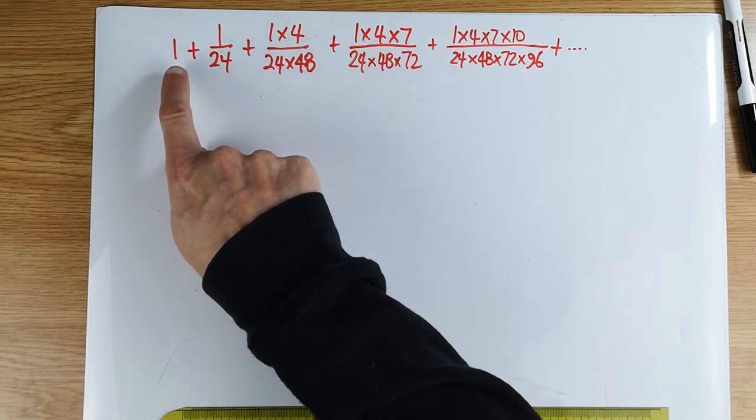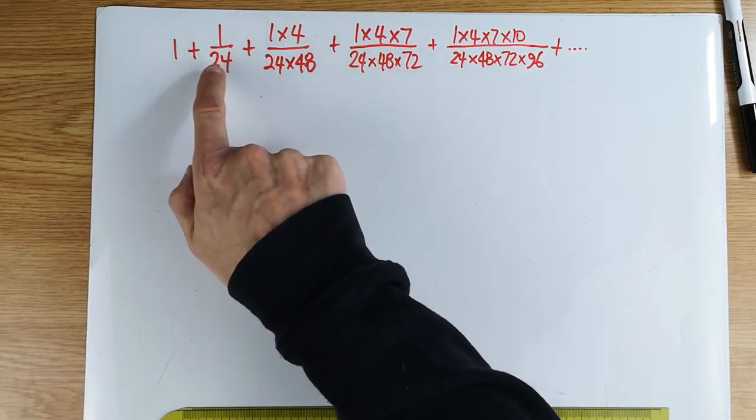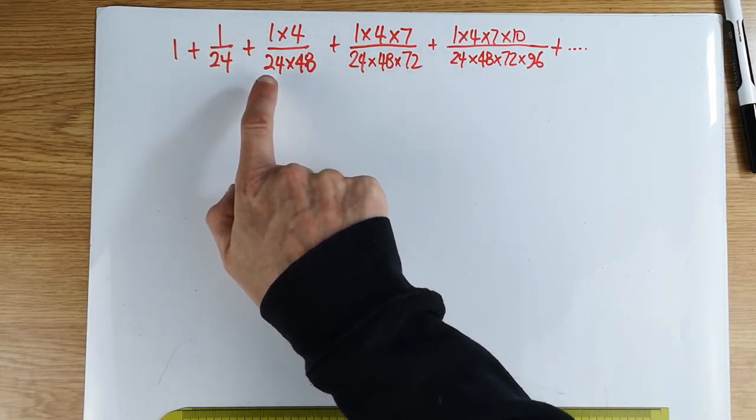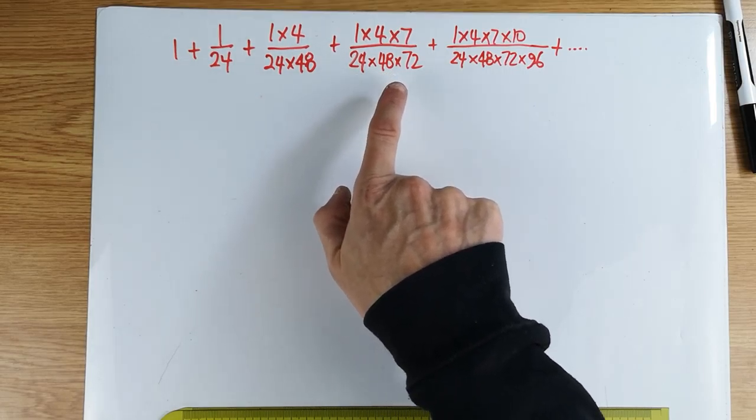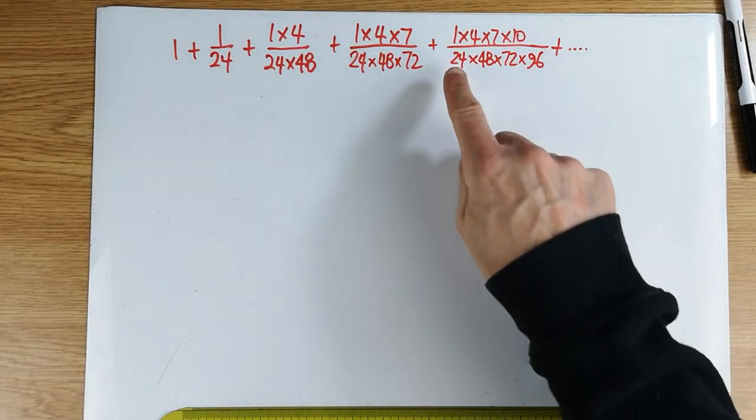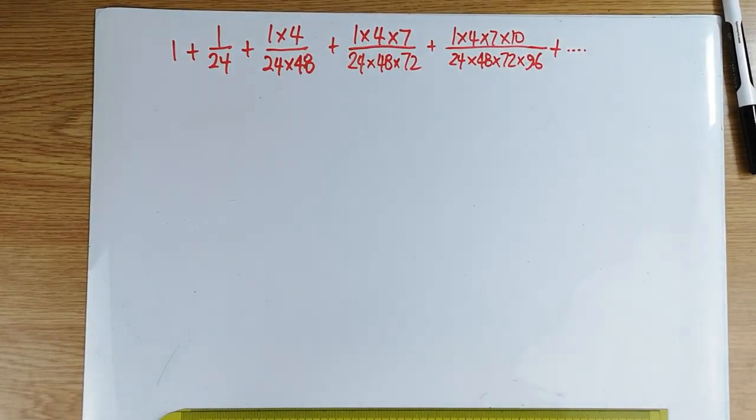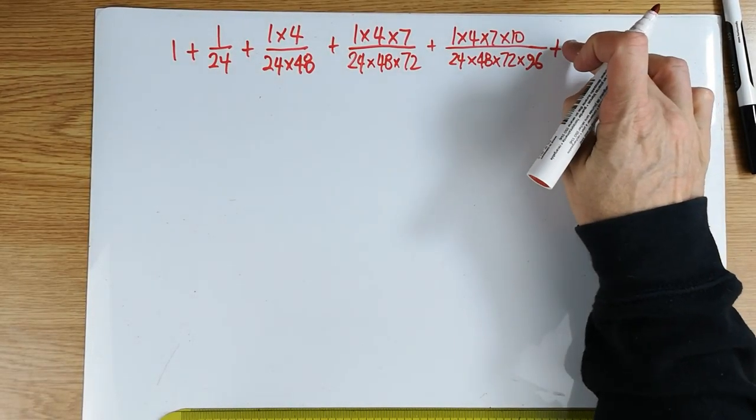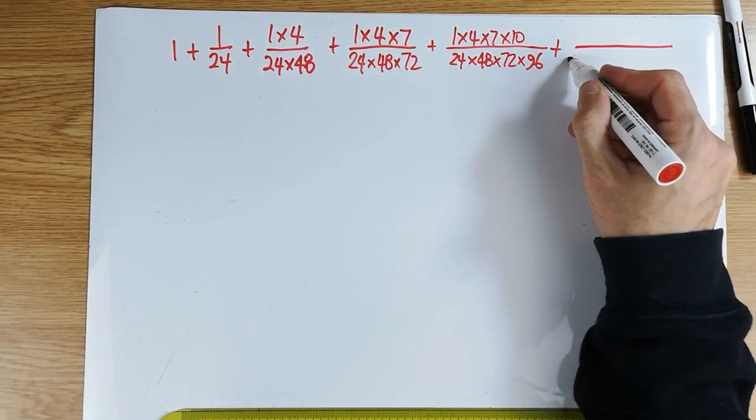We got an obvious pattern. There's the one, 1 over 24, and then we got at the bottom 24, 48, 72, 96. The next one would have been 120. So it keeps multiplying by an extra, I don't know how to describe it really, but I hope you can follow the pattern. Let me write one more term so you can actually see the pattern.